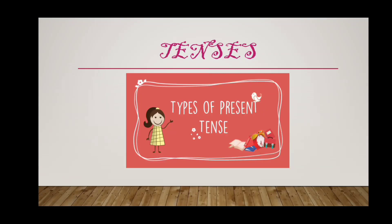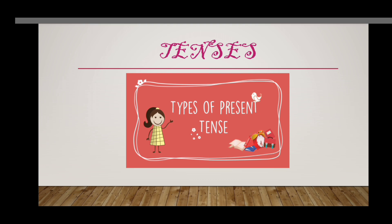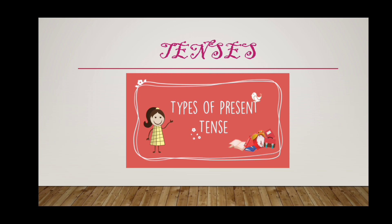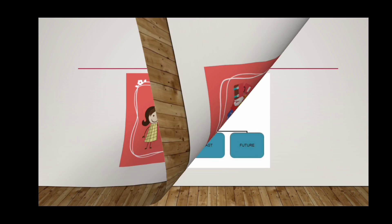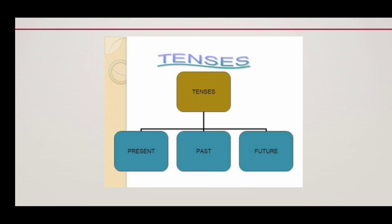Hello everyone. In this video, we will discuss present tense and its types. We know that tenses are of three types: present, past, and future. And these three types are further divided into four types: simple, continuous, perfect, and perfect continuous.